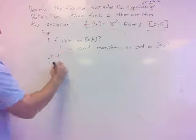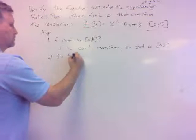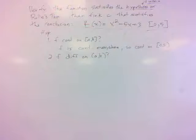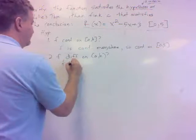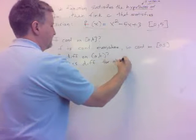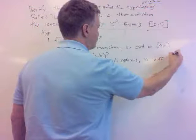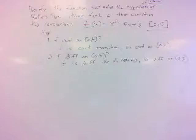What's the second one? Second hypotheses is F is differentiable on AB. Well, again, we just got a nice little function here. Just a parabola. And an X squared second degree equation. Is there anywhere that would not be differentiable? It's differentiable everywhere. For all real numbers. So it's definitely differentiable on zero five. Again, that's an open interval.